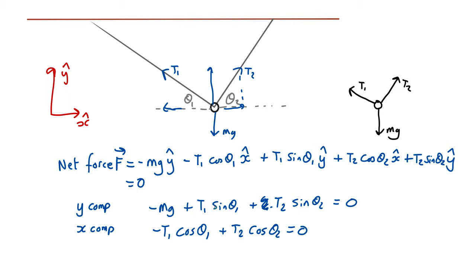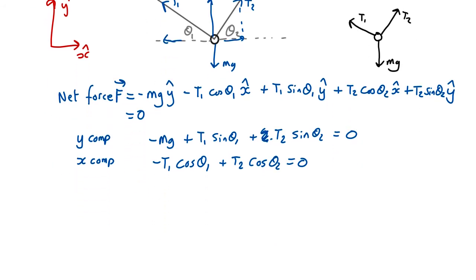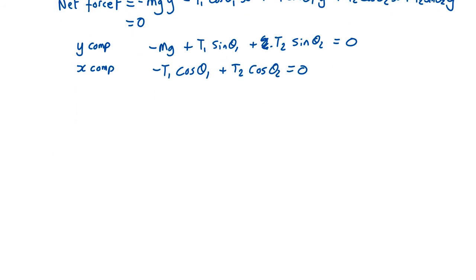So we have two unknowns, T1 and T2, and we have two equations. Therefore, we can solve all this. So how do we solve all this? Well, it's normal simultaneous linear equations. Everyone has their own favorite way of doing this. I might take this equation to begin with and rearrange it. We'll find that T1 equals T2.